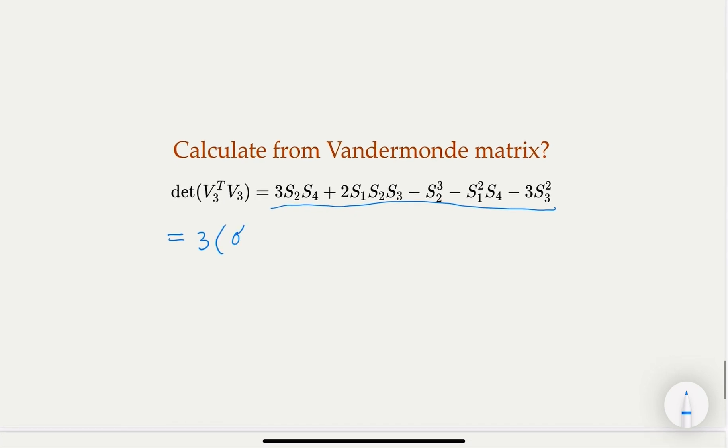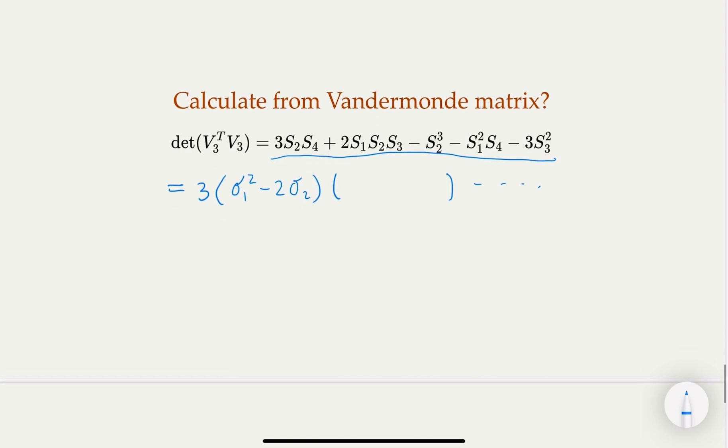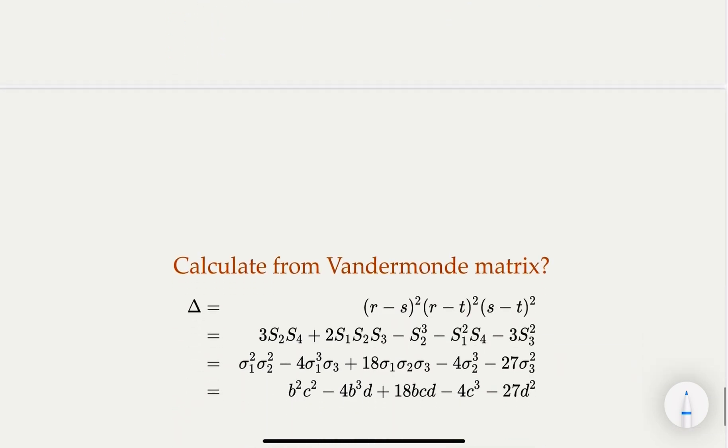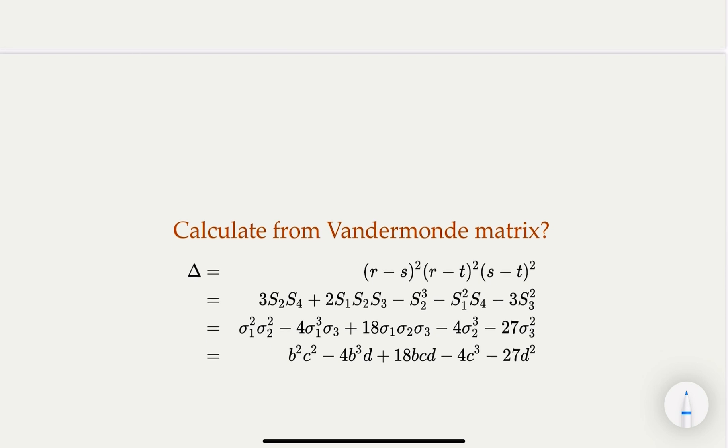Sigma 1 squared minus 2 sigma 2 times S_4. You just plug in everything here, and I'm going to skip the steps - you can do this as an exercise. And at the end, what you get is, if you plug in and calculate, you get this, which is identical to what we get from the previous lecture.